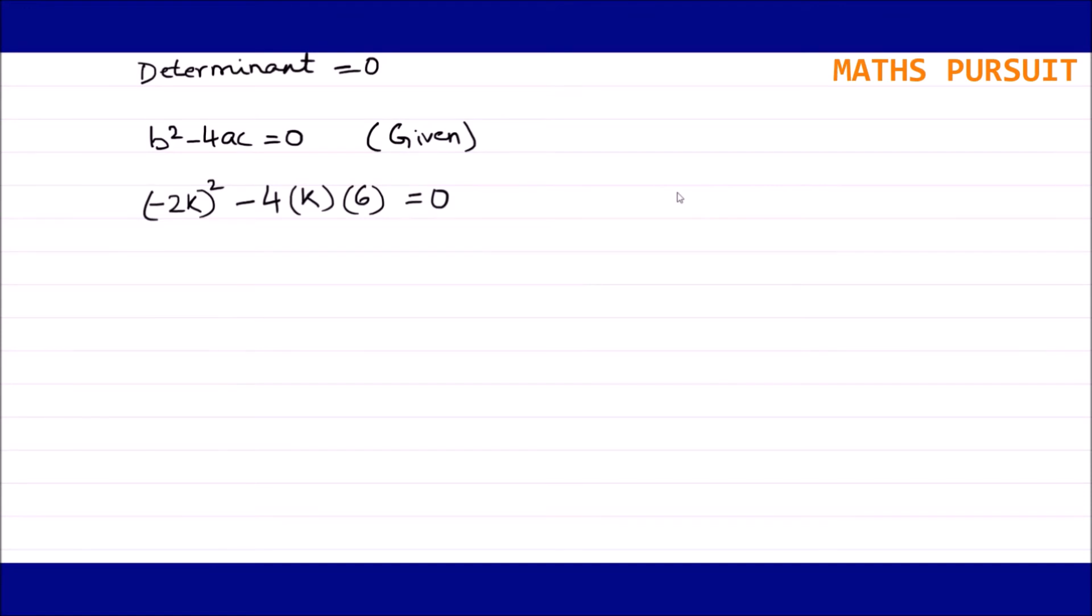So (-2k)² is nothing but 4k² - 24k = 0. Or I can write, taking 4k as a common, 4k(k - 6) = 0. I took 4k as a common because 4k × k is 4k², and 4k × 6 is 24k.